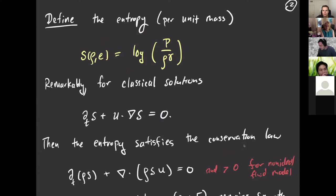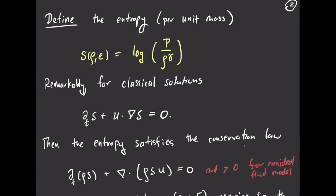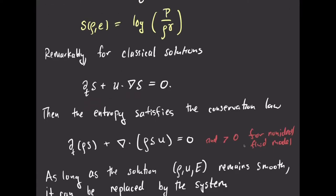A remarkable fact — maybe not so remarkable for a physicist since it's designed to be like this — is that the system of equations yields a very special structure for this quantity S: it's transported on particle trajectories, just carried around by the flow velocity. Whenever you have a quantity carried along by the flow, you can also find some quantity that's conserved. If you multiply by the mass density, you obtain a conservation law for entropy in the ideal Euler setting.